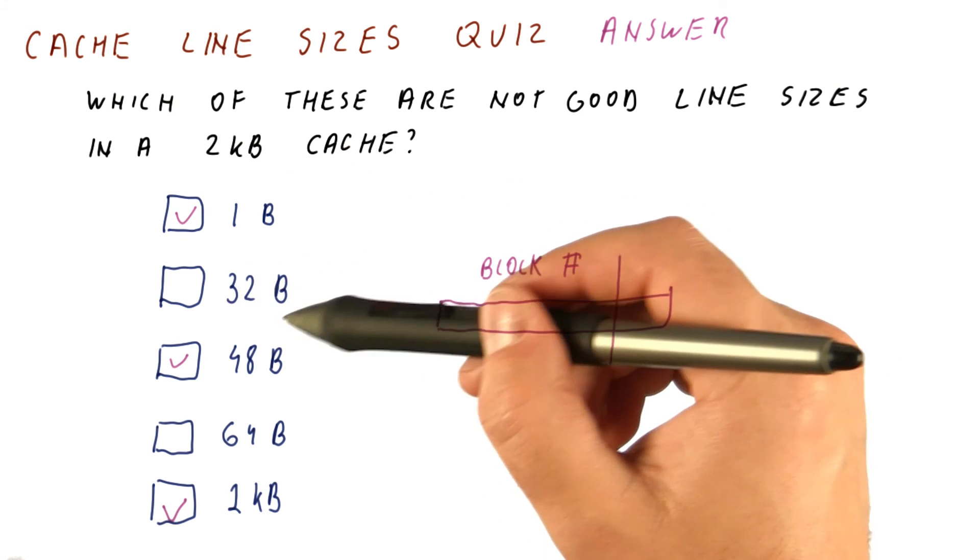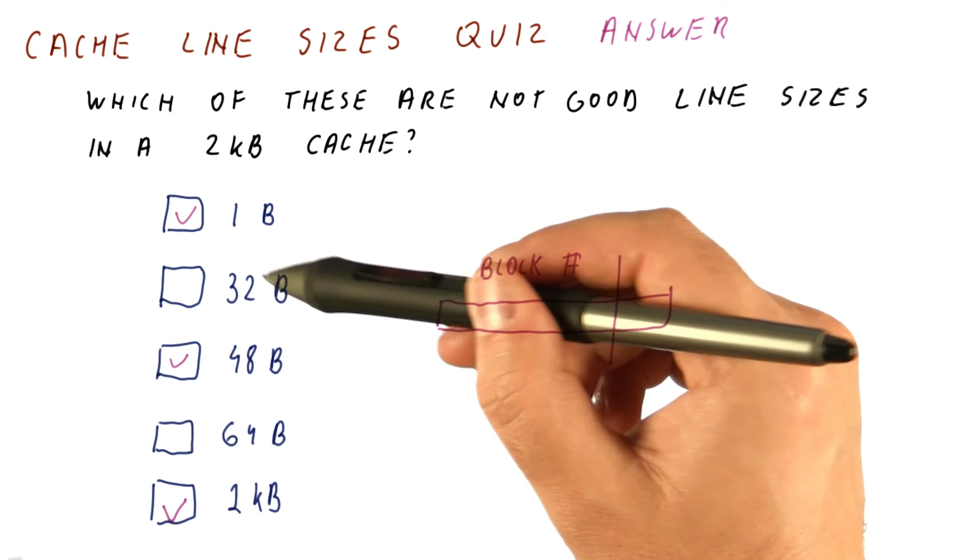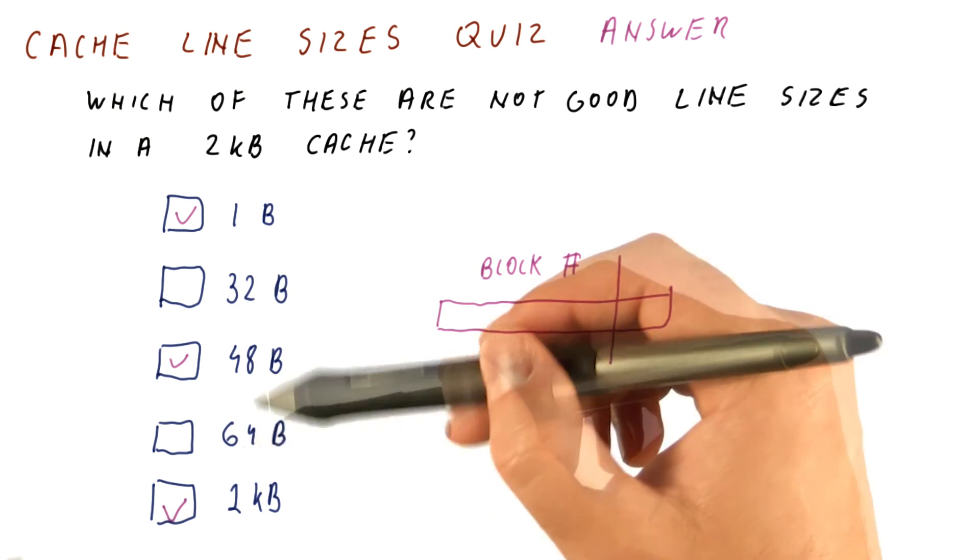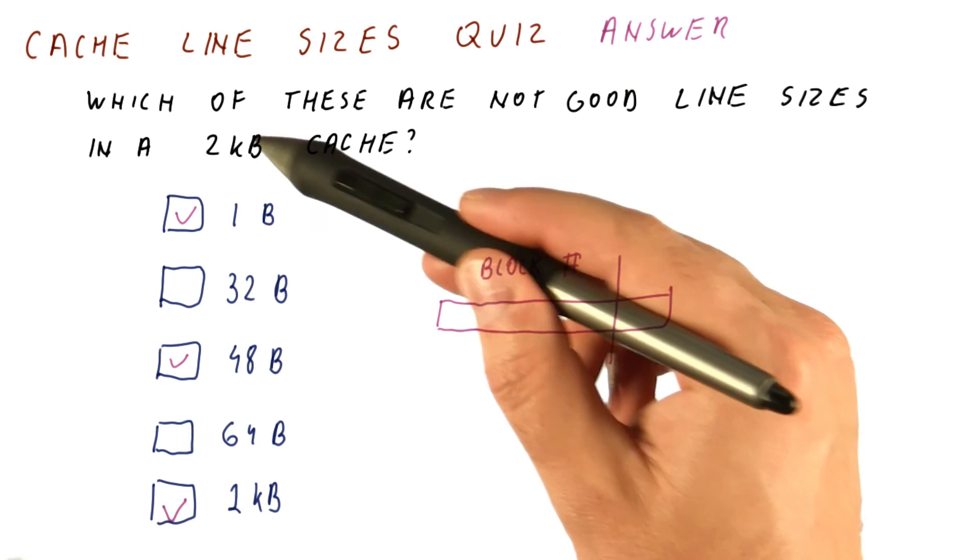What we want to have as a block size is something that is a power of two, exploits spatial locality, but still allows a significant number of them to fit in our cache.